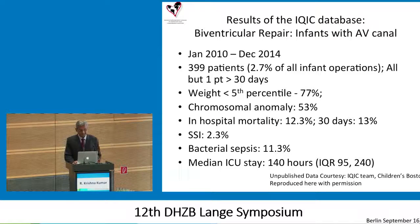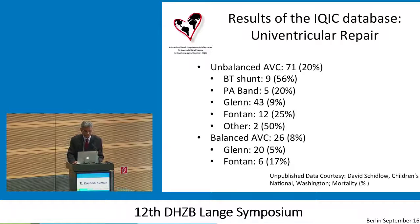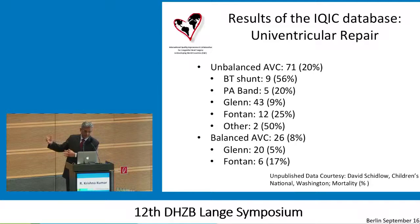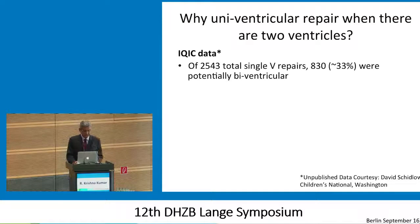This was balanced AV canals. When we talk about unbalanced AV canals, it was hard to figure out how many were balanced, but likely the majority were. We had to go to the univentricular repair database to find unbalanced AV canals — there were 71 put down the univentricular pathway, with 20% mortality. BT shunt had very high mortality in this subset. And 26 balanced AV canals were subjected to a single ventricle pathway — perhaps those complex DORV or heterotaxy cases that were difficult for that particular surgeon to fix — with 26% mortality.